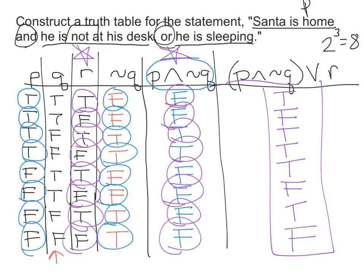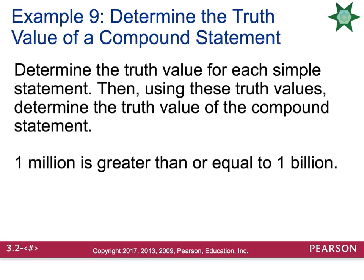This last column in purple is your solution to your truth table: true, false, true, true, true, false, true, false. Using these truth values, we can determine the truth value of a compound statement.